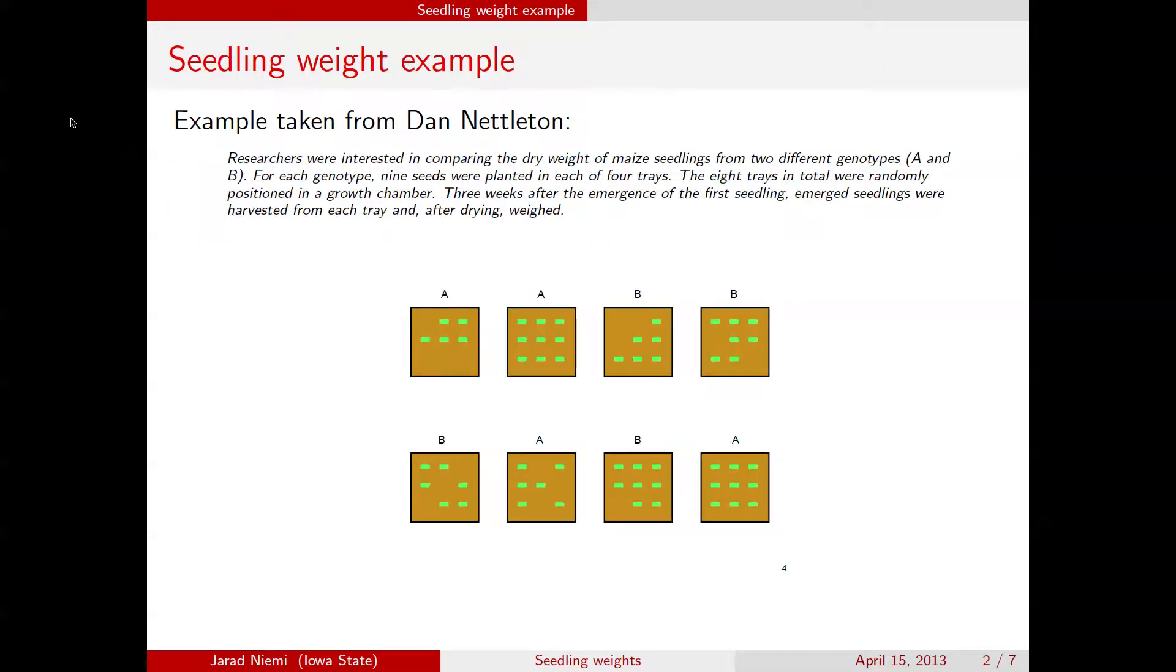As a reminder, we're looking at this particular data structure. We had corn seeds of two different genotypes, genotypes A and genotypes B. We've set up four trays of each genotype and on each tray we've planted nine seedlings. Then we've randomly put those trays into a growth chamber. We've waited for the first seedling to emerge and then waited three weeks and then taken all of the seedlings out and weighed those seedlings that had emerged.